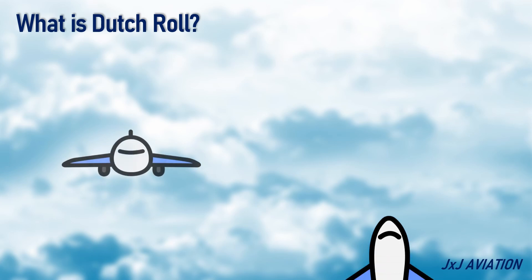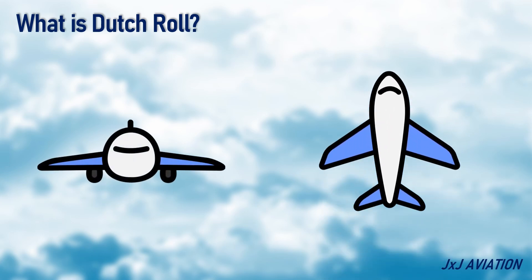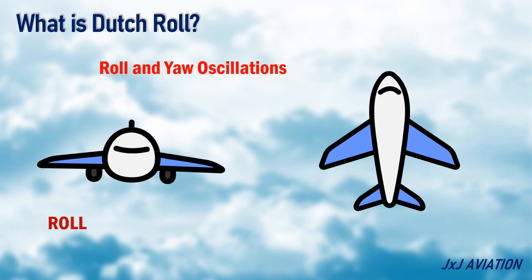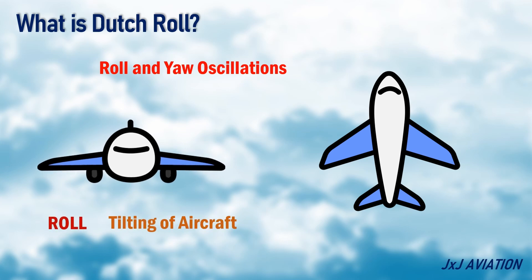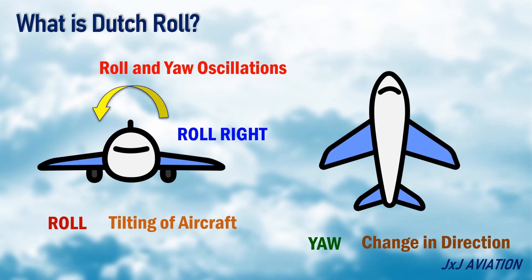Dutch Roll refers to an aircraft motion which has a combination of roll and yaw oscillations. Roll refers to tilting of an aircraft from side to side. Yaw refers to changes in direction of an aircraft.